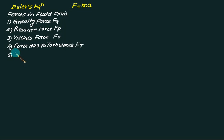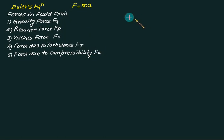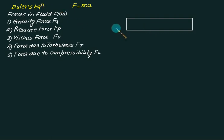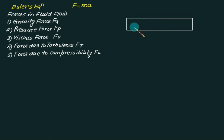Number five is the force due to compressibility. Remember, compressibility beta equals one by K. If water is supplied at very high pressure, its density becomes very high, and a huge momentum is required to move it. So it really matters whether the fluid is flowing under normal or pressurized conditions — that is why we include the compressibility effect.